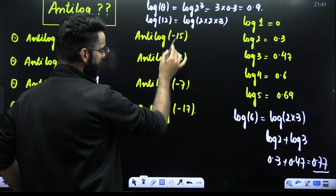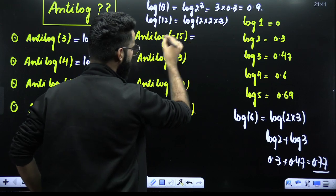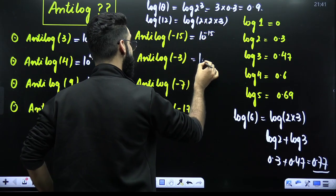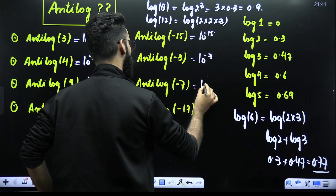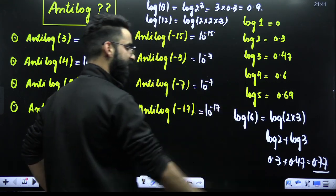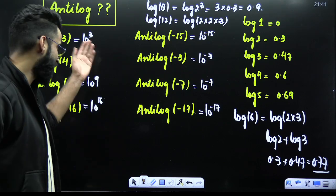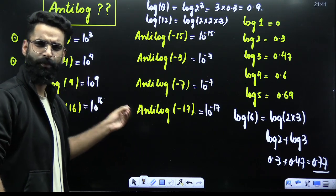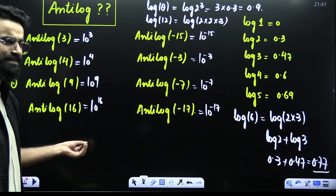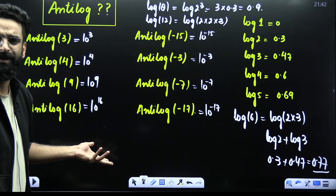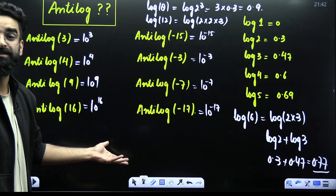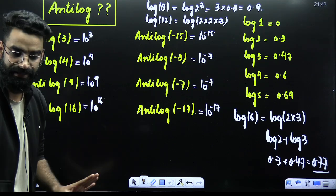Similarly, with no decimal: NT log of 10 raised to the power minus 15 — write it directly as 10^(−15). NT log of minus 3 is 10^(−3). NT log of minus 7 is 10^(−7). NT log of minus 17 is 10^(−17). NT log of minus 13 will be 10^(−13). NT log of 10 equals 10^(10). Nothing else.